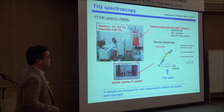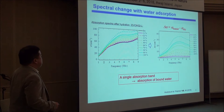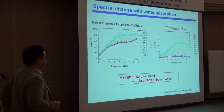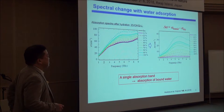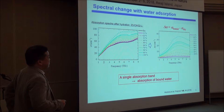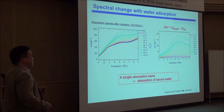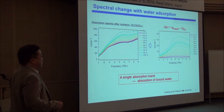We also measured three samples for each condition. This is the result. This is a raw spectrum — the black solid line shows the dry sample. As humidity increases, the absorption coefficient increases. We subtracted the dry spectra from the humidity spectra, and you can see the obtained delta-alpha is completely different from the original feature. The center frequency is very close to the vibrational band of water, so we conclude that we are looking at spectra of bound water.